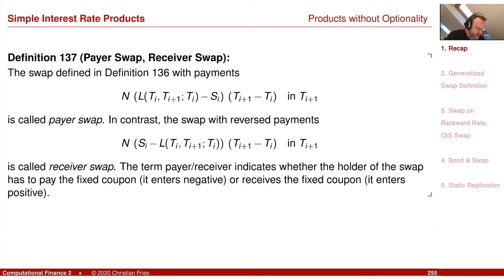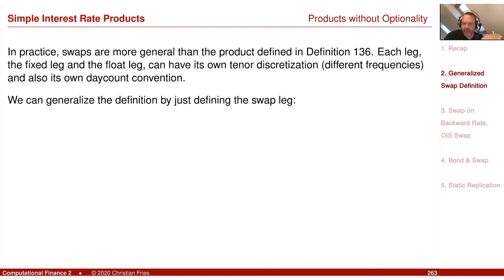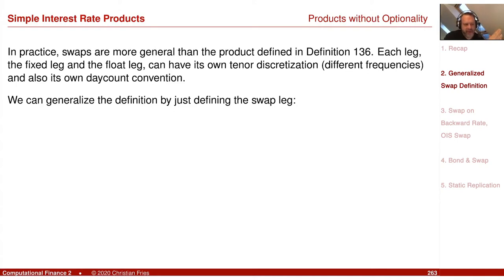To accommodate this, we can have a simple generalized definition of a swap. Our swap has two legs — one leg pays, the other leg receives. A swap leg is a bit like a bond: it has just a unidirectional payment. I have one leg that only pays and one leg that only receives. The swap is just the sum of these two legs — the difference of paying and receiving. If one is minus and one is plus, it's the sum of the two legs. So it's enough to define just such a leg, and each leg can have a different time discretization and tenor discretization.